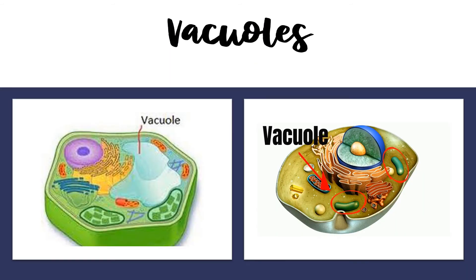Vacuoles are fluid-filled, single membrane-bounded organelles. Cells have many small vacuoles in their cytoplasm. However, when a plant cell matures, its small vacuoles absorb water and fuse to form a single large vacuole in the center, and the cell becomes turgid. Many cells take in material from outside in the form of food vacuoles and then digest the material with the help of lysosomes. Some unicellular organisms use contractile vacuoles for the elimination of wastes from their bodies.